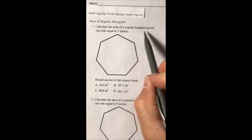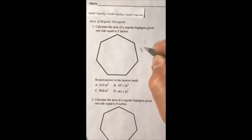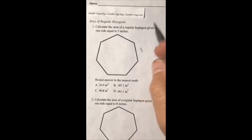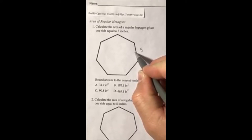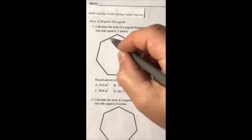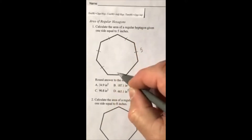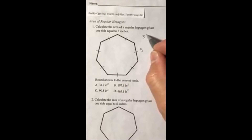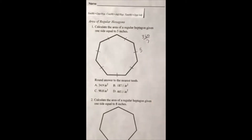Calculate the area of a regular heptagon given one side equal to five. One side is equal to five, and we know heptagon means seven sides. Let's make sure we have a seven-sided figure: one, two, three, four, five, six, seven. 360 divided by seven is equal to 51.4 approximately.